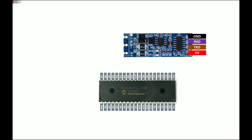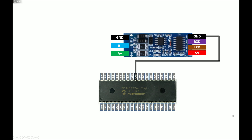Let's do the connections. The module has ground, RX, TX, and VCC on one side, and on the left side ground, B (negative), and A (positive). Ground goes to the ground of your PIC, 5V to the 5V — note that this module also operates at 3.3V, so if your microcontroller operates at 3.3V it will automatically work. The RX will go to pin C7, which is the RX pin of the PIC.